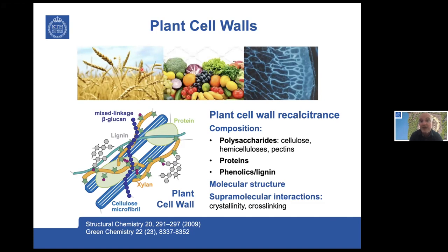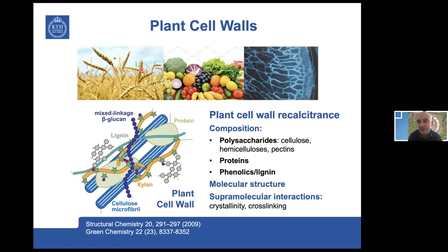In the context of the Nordic light of food, plant cell walls are very important components in many plant-based foods — for example, in cereals, in fruits and vegetables. Understanding the structure is very important, not only to utilize the different components present in these plant-based foods, but also to understand the viability and all the other properties.